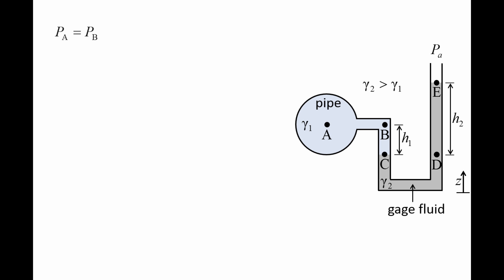The pressure at point A is equal to the pressure at point B because those two points are at the same elevation in a continuous fluid. The pressure at point B is less than the pressure at point C by the amount gamma 1 times H1. The pressure at point C is equal to the pressure at point D because those two points are at the same elevation in a continuous fluid — both points are in contact with the gauge fluid. The pressure at point D is equal to the pressure at point E, which is the ambient pressure, plus gamma 2 times H2.